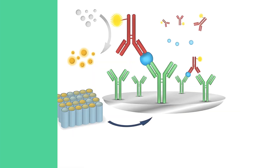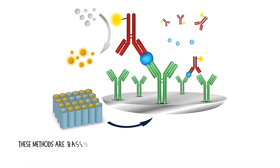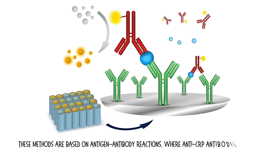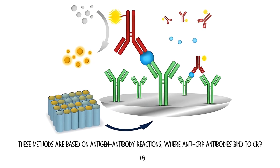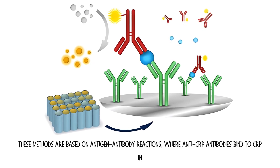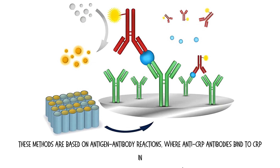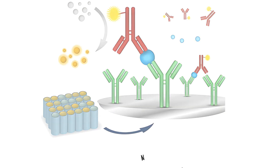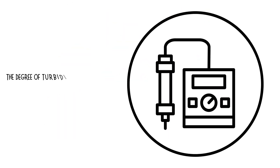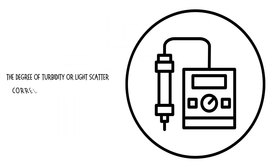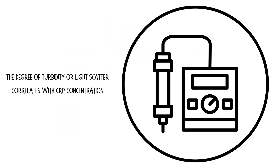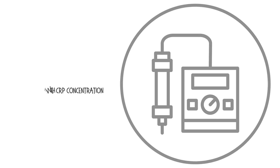These methods are based on antigen-antibody reactions, where anti-CRP antibodies bind to CRP in the sample, forming immune complexes. The degree of turbidity or light scatter correlates with CRP concentration.